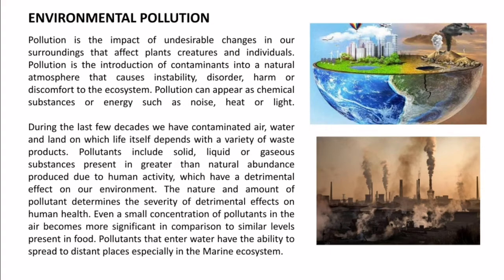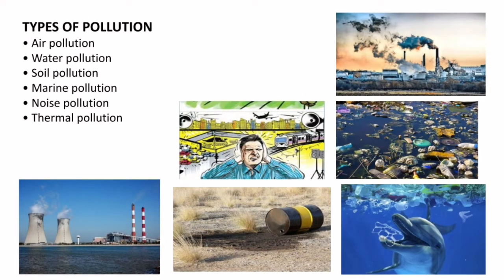Let us continue with the types of pollution: air pollution, water pollution, soil pollution, marine pollution, noise pollution, and thermal pollution. There are also other pollutions such as radiation pollution and nuclear pollution. Each image here represents a type of pollution — air pollution, noise pollution, water pollution. We can see how plastics thrown into the ocean destroy marine species. Oil leakages cause soil pollution, and heated water discharged into water bodies causes thermal pollution.